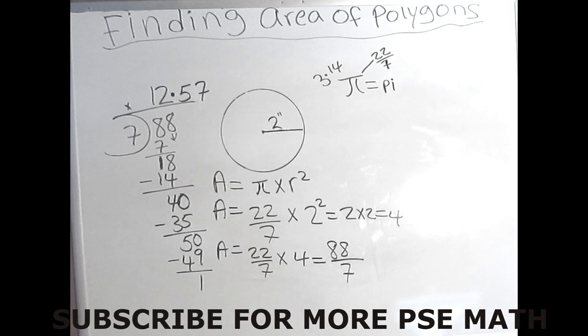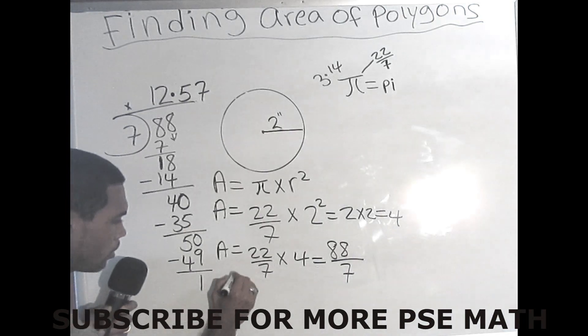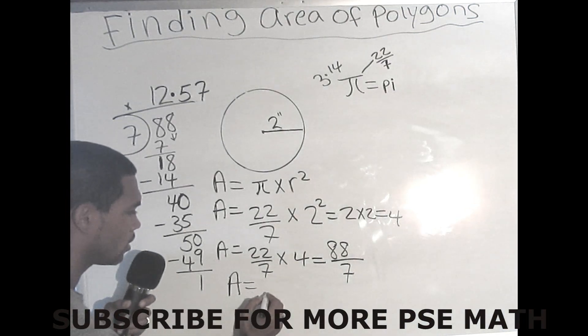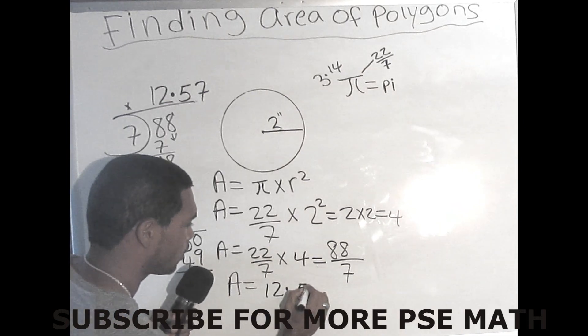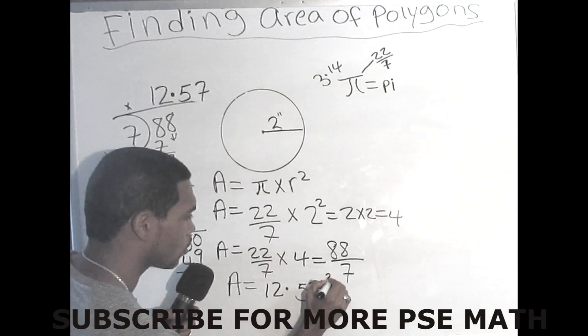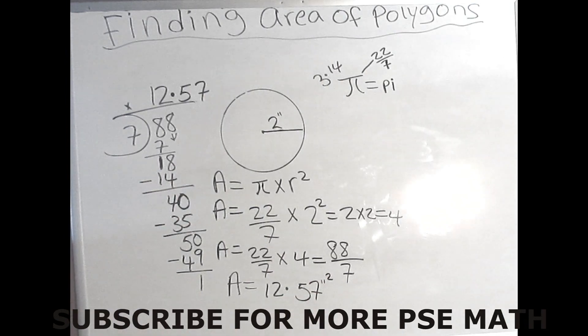We could add another 0 and continue and have the answer go on and on and on. It will give you 12.57, and it will give you more numbers at the end. But usually in any problem like this, even when you're solving a problem or dividing with money, you always stop at 2 decimal places. So the area of this problem equals to 12.57 inches squared. And we do that, and our problem is solved.